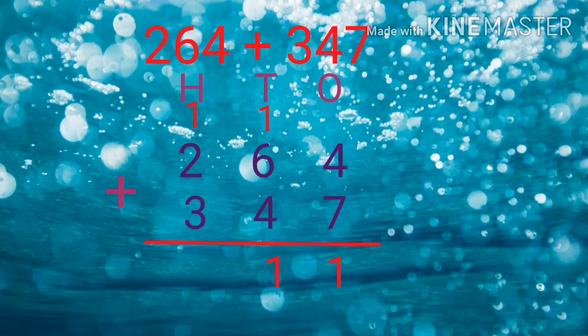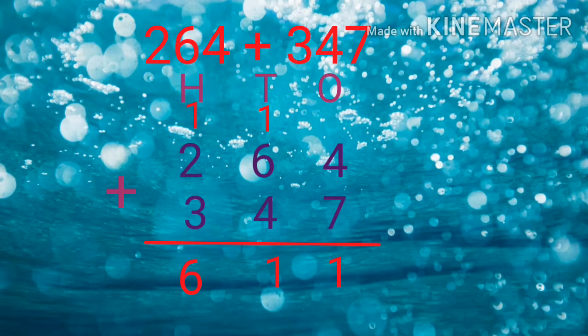Now add the digits in the 100's place. What are the digits? 1, 2 and 3. What is 3 plus 2? Yes, it is 5. So 5 plus 1 will give you 6. The answer is 611. So 264 plus 347 is equal to 611.